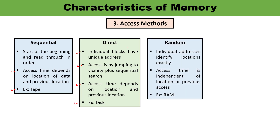The third access method is random access. Individual addresses identify locations exactly, and access time is independent of the location or previous access. Random access is used to randomly access data from memory — access is not done sequentially, it is opposite to sequential access. For example, going from A to Z, you can directly jump to any specific location — to C, then G, then H, anywhere — whereas sequential access requires following the sequence from first to last.